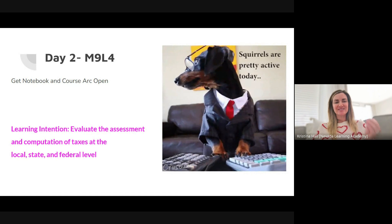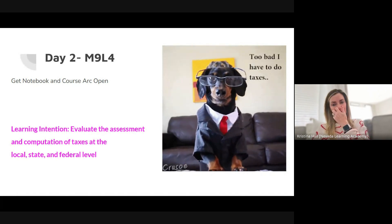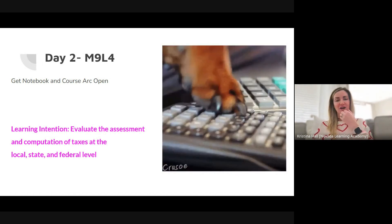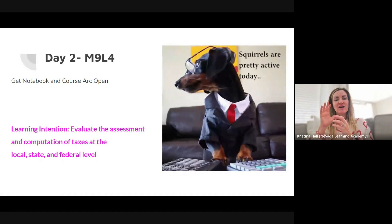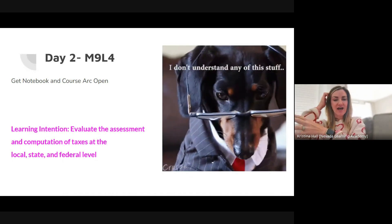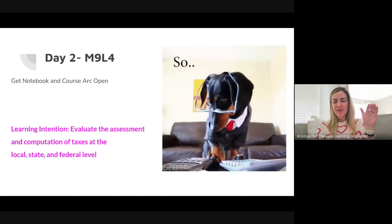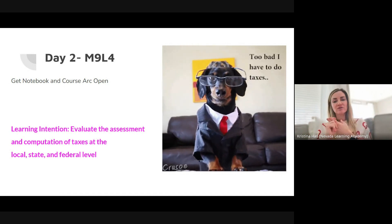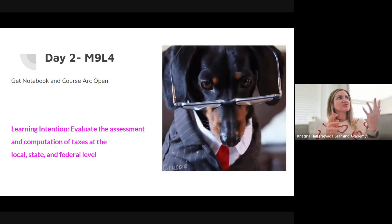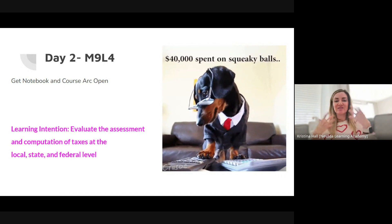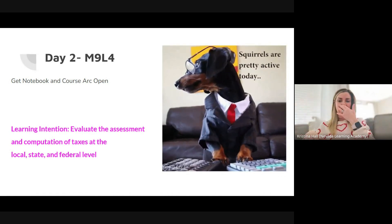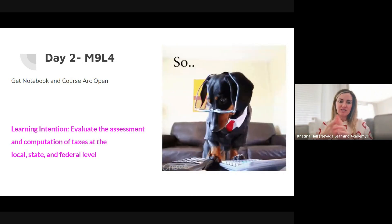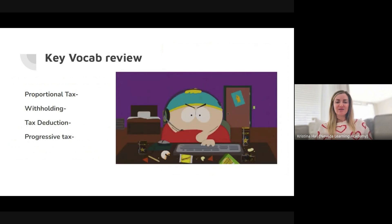We're going to continue with our learning intention: evaluate and assess taxes at the local, state and federal level. There are three different levels of taxes. Federal level, which is where we pay income tax on every check you get — they take those taxes out when you get a job. State taxes, which we can pay either as a flat tax like in Oregon, or a sales tax like here in Nevada. And then we pay local taxes through gas, utilities, and service fees. Every time I pay my electric bill, gas bill, water bill, there are taxes and fees built into those that local areas collect. Also, when people own a house or property, they pay property tax, which goes to the local level — county or city.